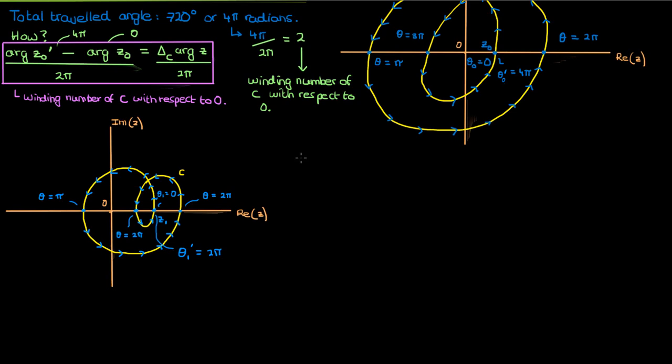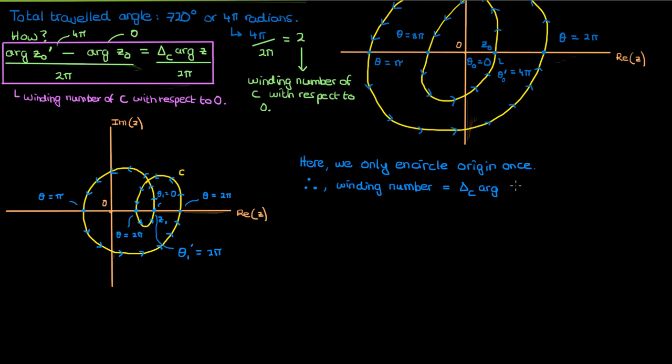Another way to think about it is that I only circle the origin once — I only go around 360 degrees or 2pi radians as I traverse this curve. I go around this point twice inside this little loop over here, but I only go around the origin once. Therefore the change in the argument of z1 when I end up back at z1 is only 2pi, which makes the winding number equal to 1.